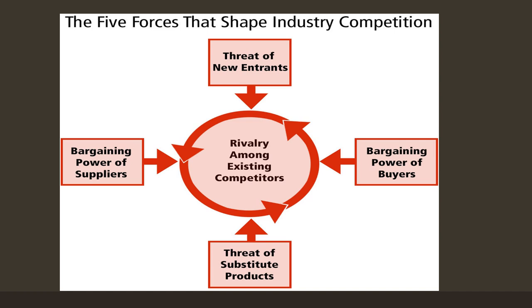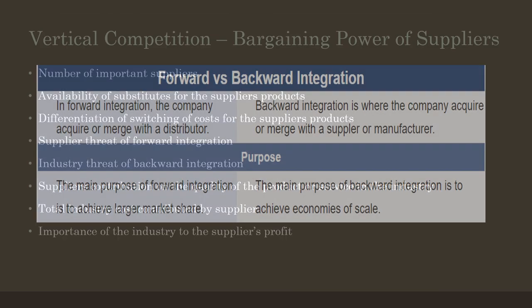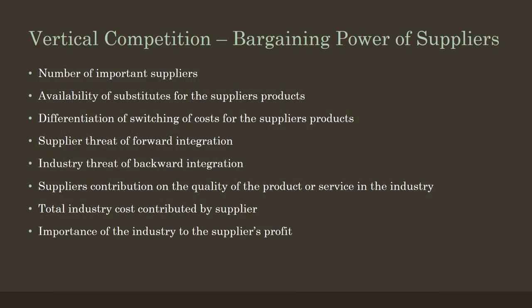You constantly have to be aware of these different forces to ensure you understand your competition and how to compete in today's marketplace. We'll talk about each one in more detail. First: vertical competition — the bargaining power of suppliers. Suppliers play a critical role in many industries. A supplier could be a factory providing raw materials, actually producing your products, or a third-party supplier of technology providing software for your company.